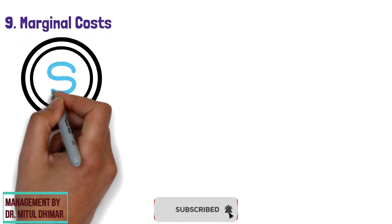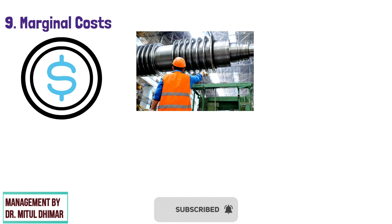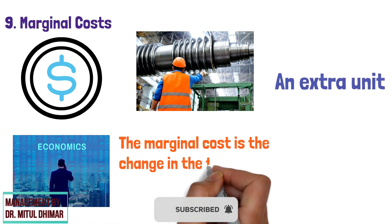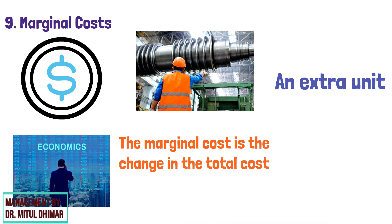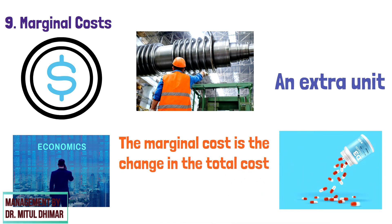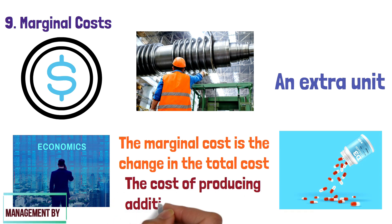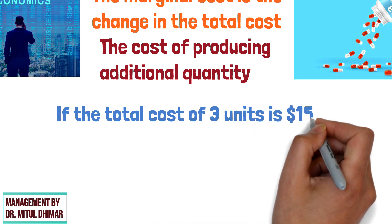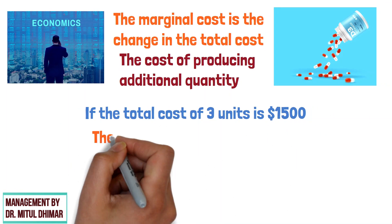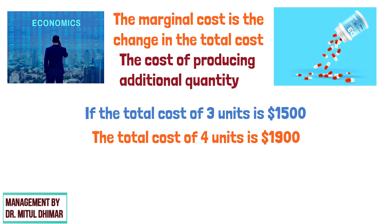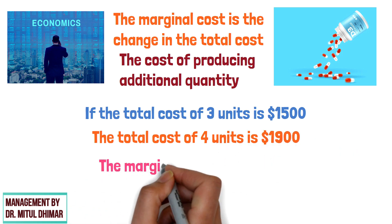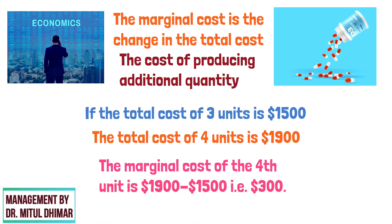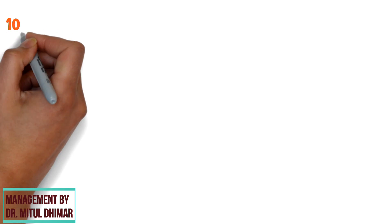Number 9: Marginal Cost. Marginal Cost is the cost of producing an extra unit. In economics, the marginal cost is the change in the total cost that arises when the quantity produced is incremented — that is, the cost of producing additional quantity. For example, if the total cost of 3 units is $1,500 and the total cost of 4 units is $1,900, the marginal cost of the 4th unit is $1,900 minus $1,500, that is $400.